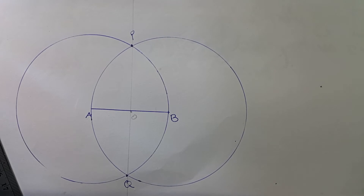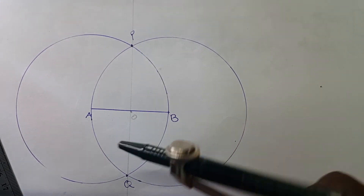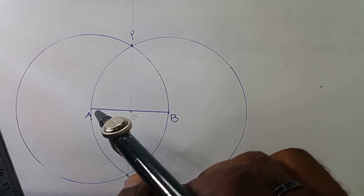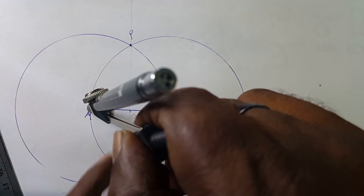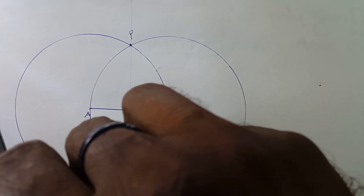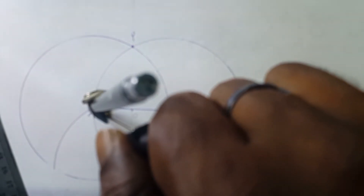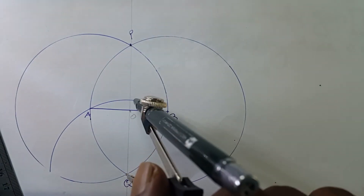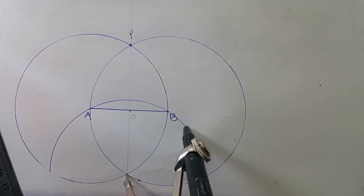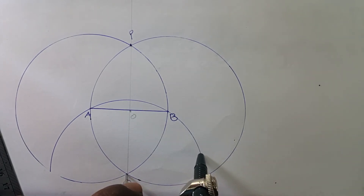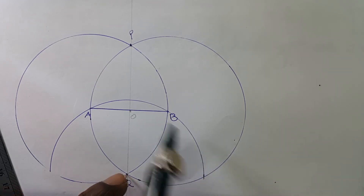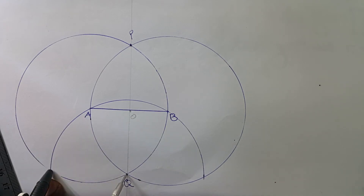Again, take your compass and set the compass point on Q and set a radius AQ. Using AQ as your radius, draw an arc here. That arc will pass through the point A and B, and finally it touches the circle here. Similarly, that arc also touches the first circle here.